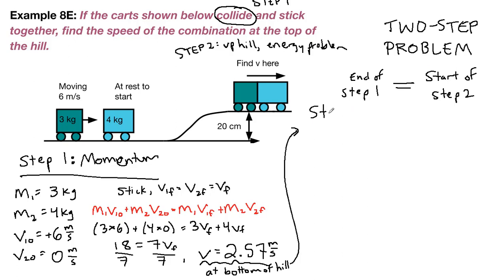So step 2 is an energy problem, so we really should be going through the full energy process. And that starts with a picture, with before and after. So before, 3 plus 4 is 7 kilograms. We have this 7 kilogram combination,